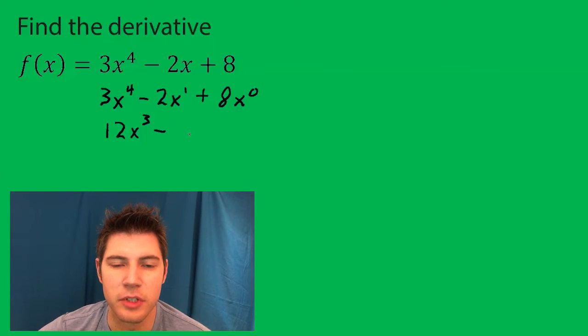Minus, we bring that exponent down, so 1 times negative 2 is negative 2, x to the 0.